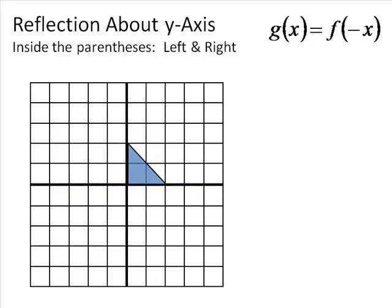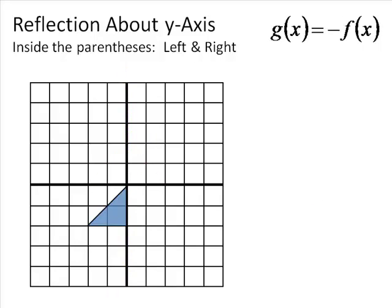Reflecting about the y-axis is something similar. Except now the negative sign is inside the parentheses. Since it's inside the parentheses, that means it's a left-right thing. So a negative inside gives you a left-right reflection — it just reflects right across.